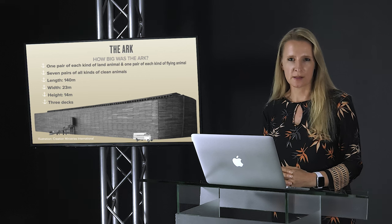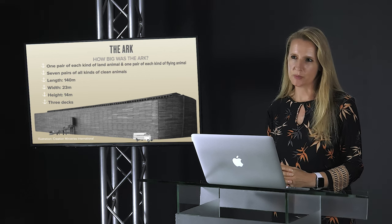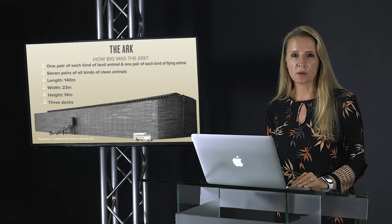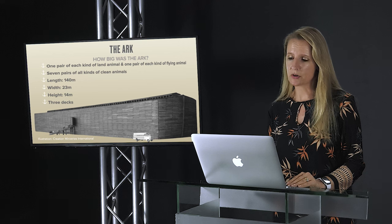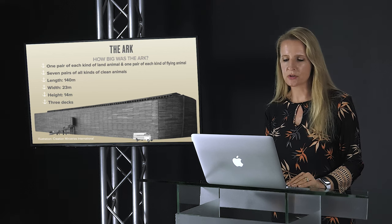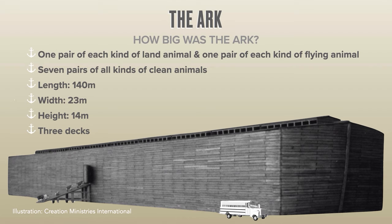God commanded Noah to build an ark so that he and his family could be safe. The ark had to be big enough to keep one pair of each kind of land animal and flying animal alive during the flood. God declared certain animals as clean — not because they like to take a bath, but because they are acceptable for humans to eat. Only clean animals were used in sacrifices, which is why God told Noah to take seven pairs of all kinds of clean animals on board as well.